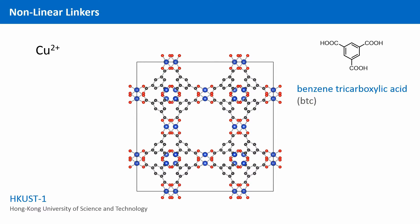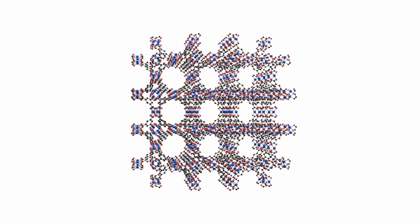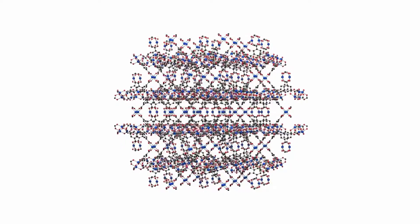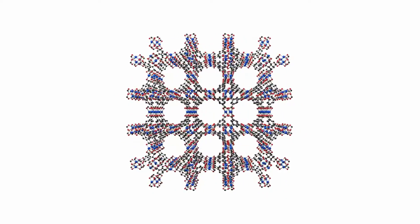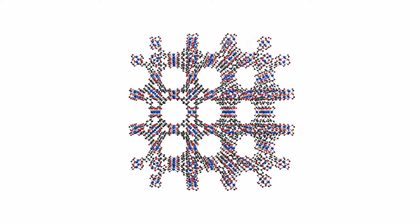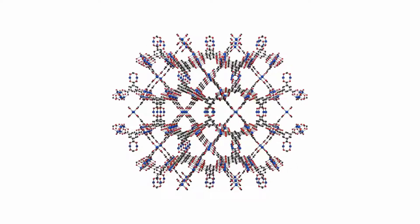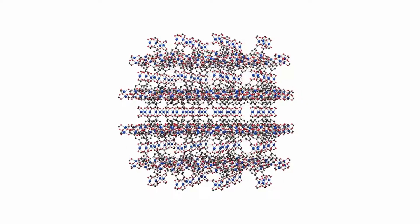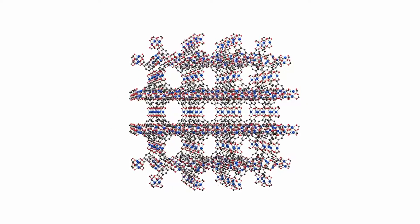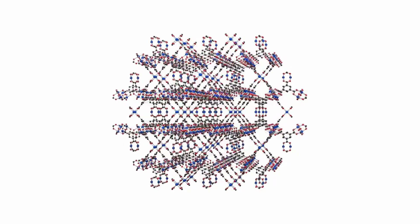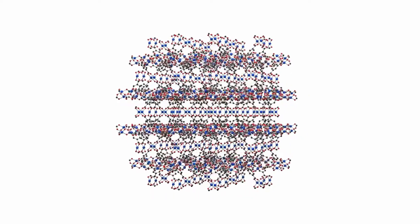And this affects the overall structure. The three-connecting linker now leads to a three-dimensional structure of the framework. We will discuss this structure in detail in the next chapter. For now, just take it like it is. A network that consists of three connecting nodes, the organic SBUs, and four connecting nodes, the inorganic SBUs.